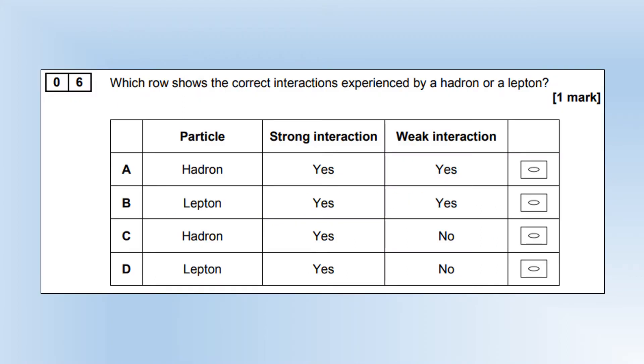Which row shows the correct interactions experienced by a hadron or a lepton? So hadrons can experience strong interaction. Leptons cannot. So therefore straight away we know it's got to be A or C. But hadrons can also experience the weak interaction, so it's going to be A.